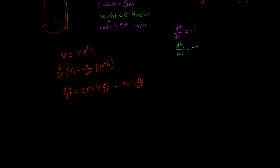Now we've set this entire thing up and we just plug in what we know. The derivative of the volume with respect to time equals 2pi times the radius (which is 5) times the height (at that instant it's 8) times the derivative of radius with respect to time (positive 1), and then we add pi times the radius squared (5 squared) multiplied by negative 4.